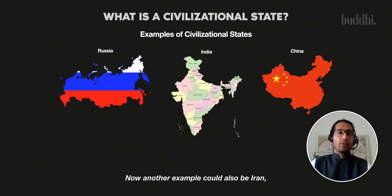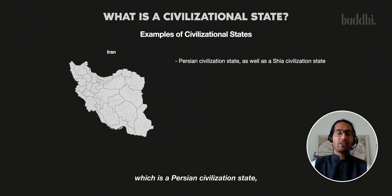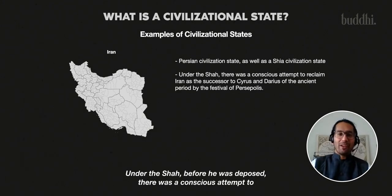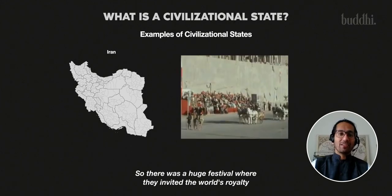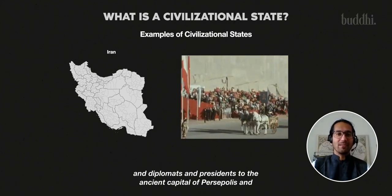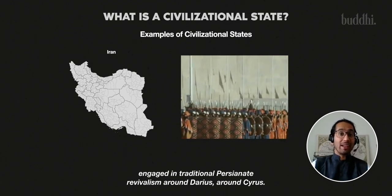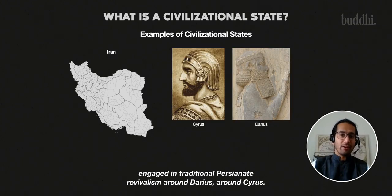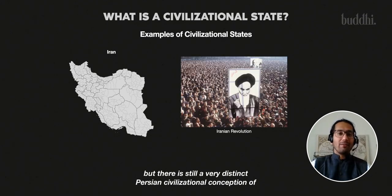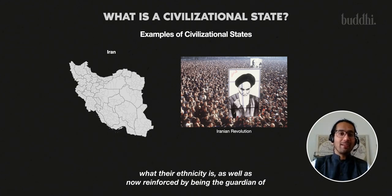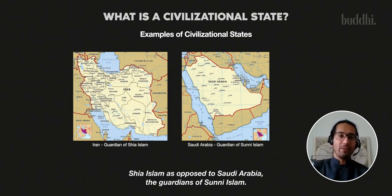Another example could also be Iran, which is a Persian civilizational state as well as a Shia civilizational state — so it functions as a two-in-one package. Under the Shah, before he was deposed, there was a conscious attempt to reclaim Iran as the successor to Cyrus and Darius of the ancient period through the Festival of Persepolis — a huge festival where the world's royalty, diplomats, and presidents were invited to the ancient capital and engaged in traditional Persianate revivalism. That was nipped in the bud after the Iranian revolution, but there is still a very distinct Persian civilizational conception, reinforced by being the guardian of Shia Islam, as opposed to Saudi Arabia, the guardians of Sunni Islam.